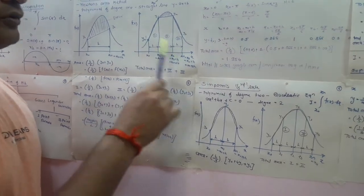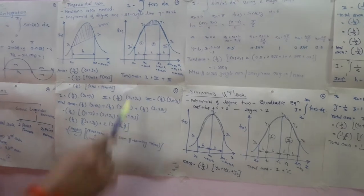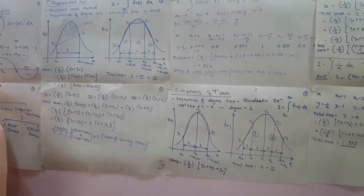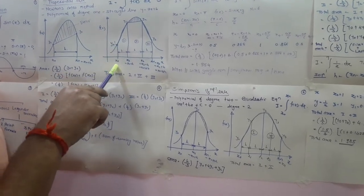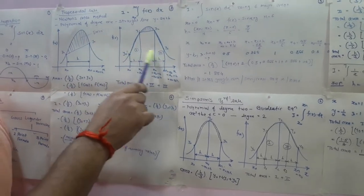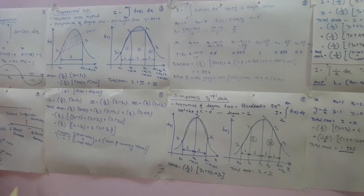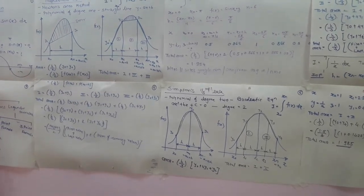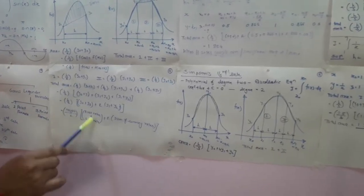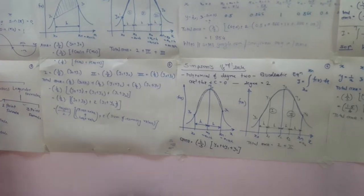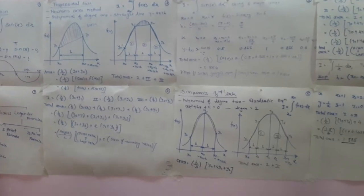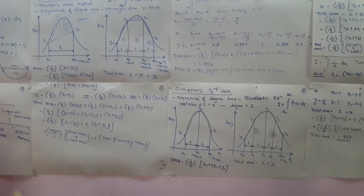If the number of major strips is more — suppose we have three major strips — the graphical representation has coordinates x₀, x₁, x₂, and x₃ with corresponding values y₀, y₁, y₂, and y₃, giving three different areas. The total area equals the addition of Area 1, Area 2, and Area 3. The summarized formula is: (h/2) × [first term + last term + 2 × (summation of remaining terms)]. The total number of strips equals the total number of major strips.